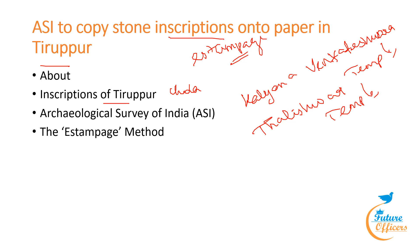The Archaeological Survey of India is under the Ministry of Culture and is the premier organization for archaeological research and protection of cultural heritage. It administers more than 3,650 ancient monuments, archaeological sites, and remains of national importance. Its activities include carrying out surveys, exploration and excavation of archaeological sites, and conservation and maintenance of protected monuments. It was founded in 1861 by Alexander Cunningham.